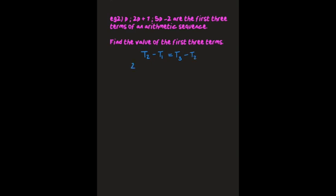I'm going to fall back on this beautiful little tool of ours: term 2 minus term 1 equals term 3 minus term 2. So term 2 in this pattern is 2p plus 1 minus term 1 which is p. Term 3 is 5p minus 2 minus term 2 which is 2p plus 1. What we're going to do is simplify the left hand side and the right hand side and then solve our equation.